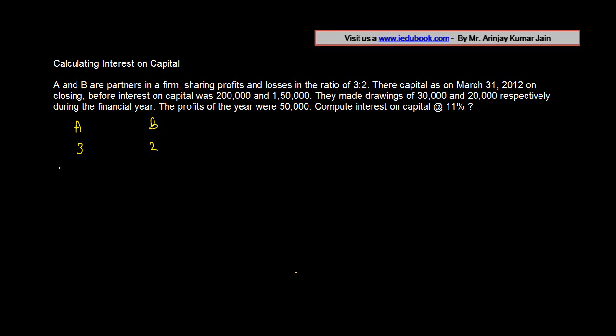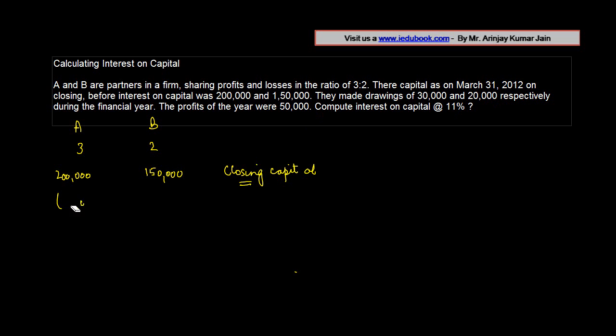Note this word closing very carefully because this is important. They made drawings of 30,000 and 20,000 respectively during the financial year. The drawings done by two of them are 30,000 and 20,000 respectively. The profits for the year were 50,000.